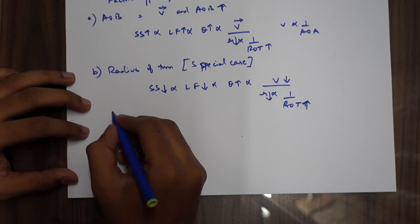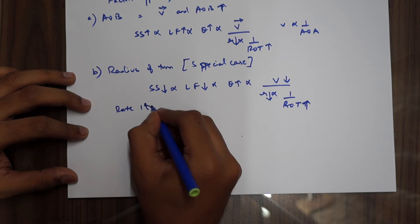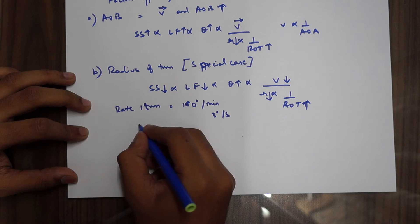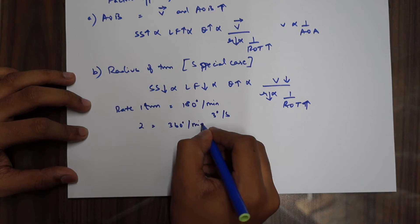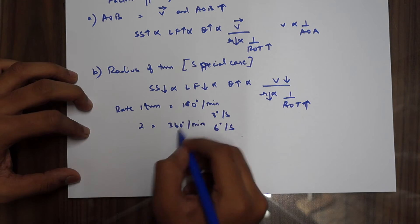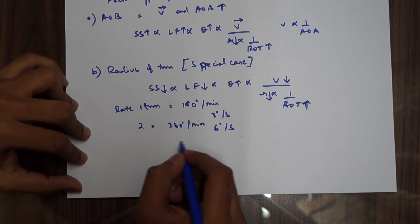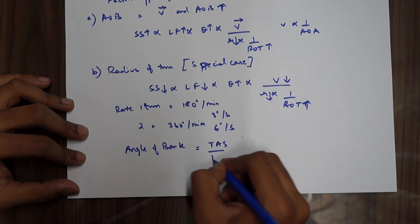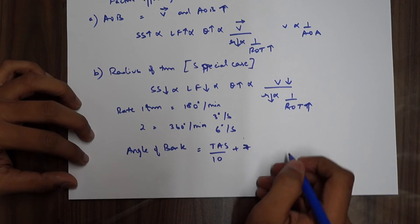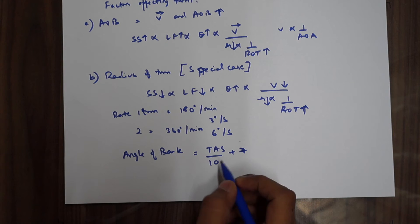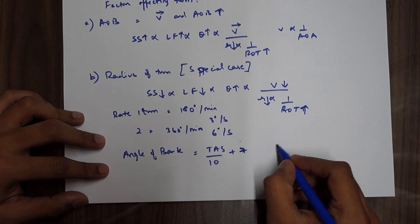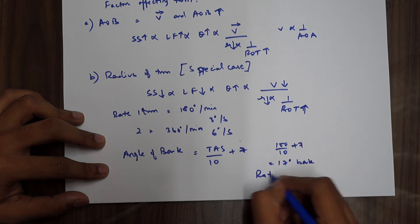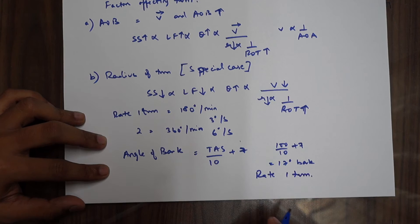There are specific kinds of turns: rate one turn is the most used — it is 180 degrees per minute, that is 3 degrees per second. Rate two is 360 degrees per minute, 6 degrees per second. A good formula to remember when flying is what angle of bank to maintain: TAS divided by 10 plus 7. This is a good rule of thumb — suppose you are flying at 100 knots: 100 divided by 10 plus 7 equals 17 degrees of bank, which gives you a rate one turn.